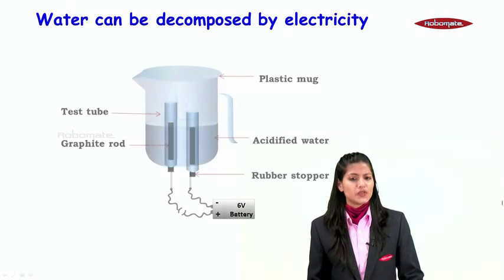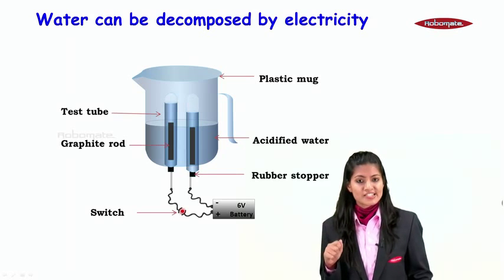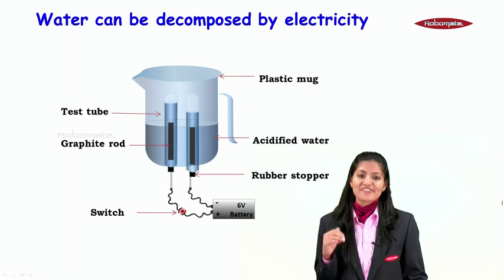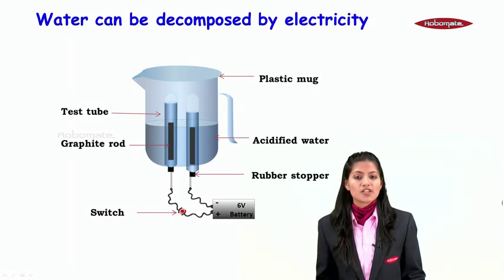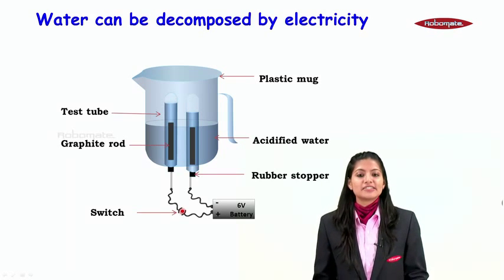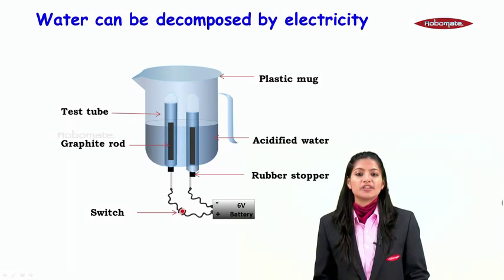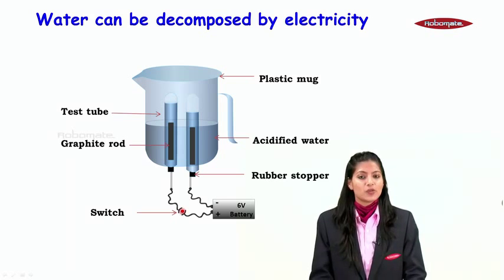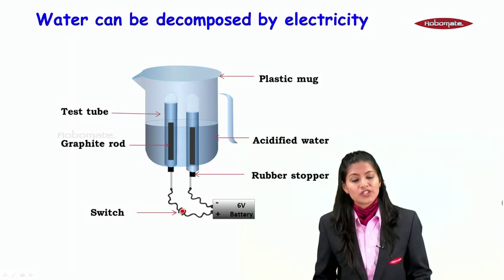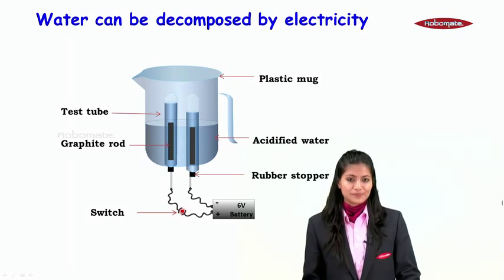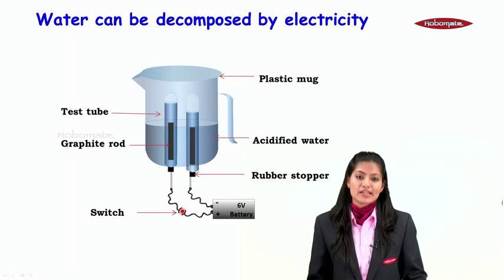For this we are going to take a simple experimental setup wherein we have a plastic mug in which we have acidified water, and we can also see two graphite rods which are connected to the negative and positive terminal of the battery. Also there are two test tubes which are kept inverted over the graphite rod, and there is a switch for manipulating the supply of electric current. And the moment the switch is put on, electricity is gonna start flowing.